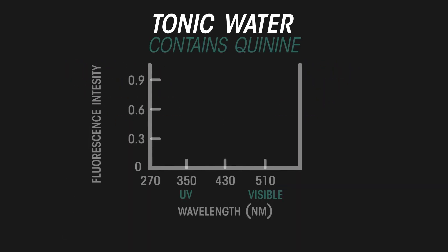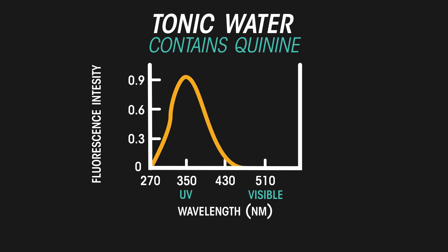This graph shows the wavelength of UV that quinine absorbs, mainly around 350 nanometres. The excited electrons in quinine return to their ground state in stages, emitting a longer wavelength of light, mainly around 460 nanometres, the blue region of the visible spectrum.